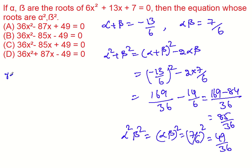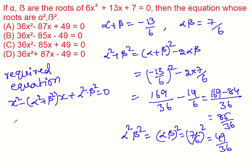So the required equation, that is, x square minus alpha square plus beta square of x plus alpha square into beta square equal to 0.